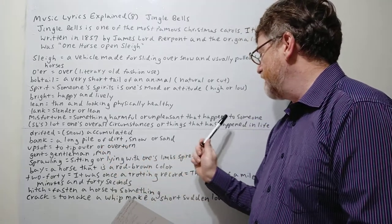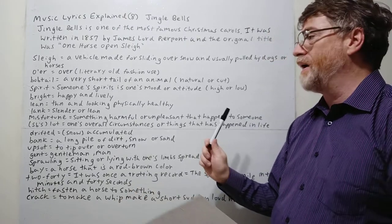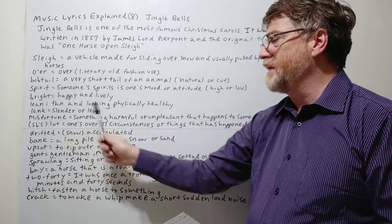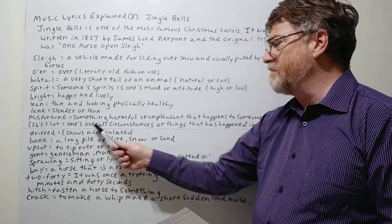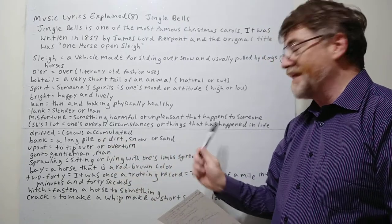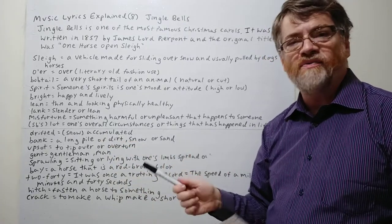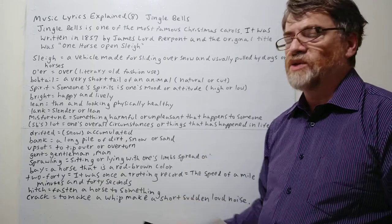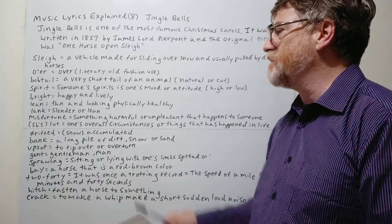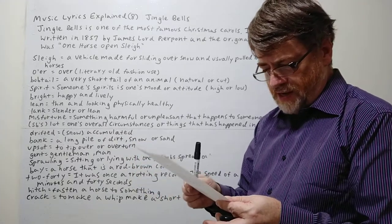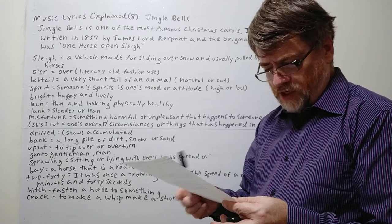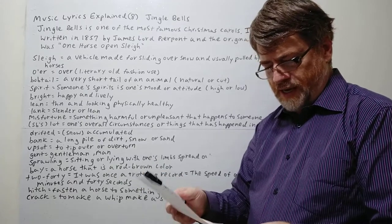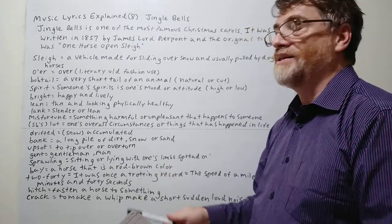Misfortune seemed his lot. Misfortune means bad luck—something harmful or unpleasant that happens to someone. His lot—we often say somebody's lot, meaning somebody's overall circumstance or things that happened to them. We sometimes say your lot in life means that's just the situation, the way your luck has worked out. So for this horse, this was misfortune, at least on this day. He got into a drifted bank and then we got upsot.